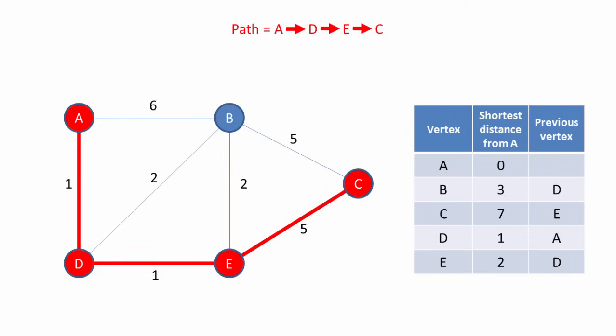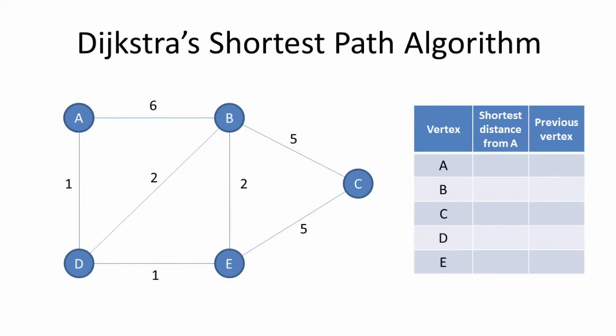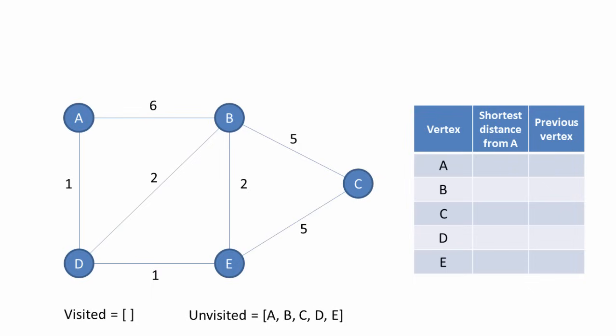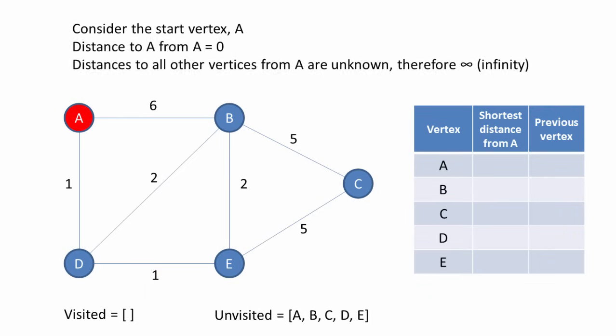So how does Dijkstra's algorithm go about generating this information? Dijkstra's shortest path algorithm works as follows. We use two lists: one to keep track of the vertices that we've visited, and another to keep track of the vertices that we haven't visited yet. The distance to A from A is 0. The distances to all other vertices from A are unknown, so for the purposes of the algorithm we're going to set them to a very high value — let's say infinity.